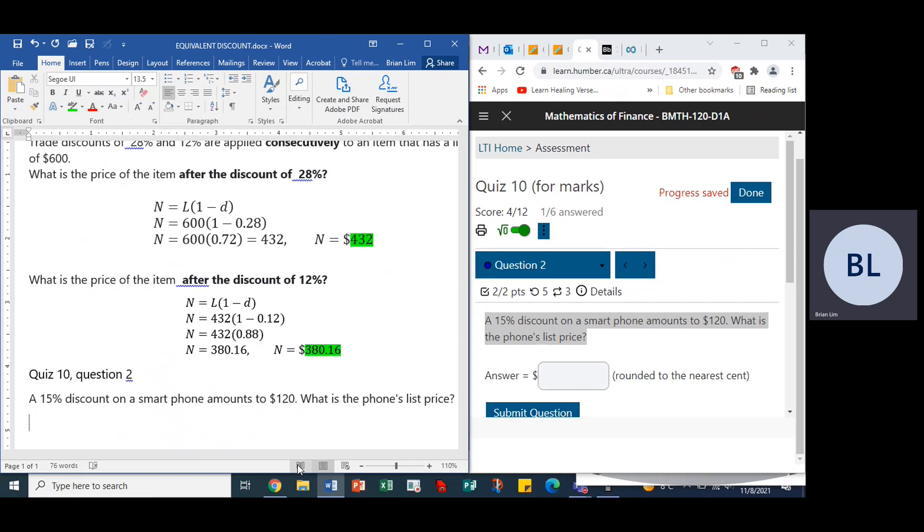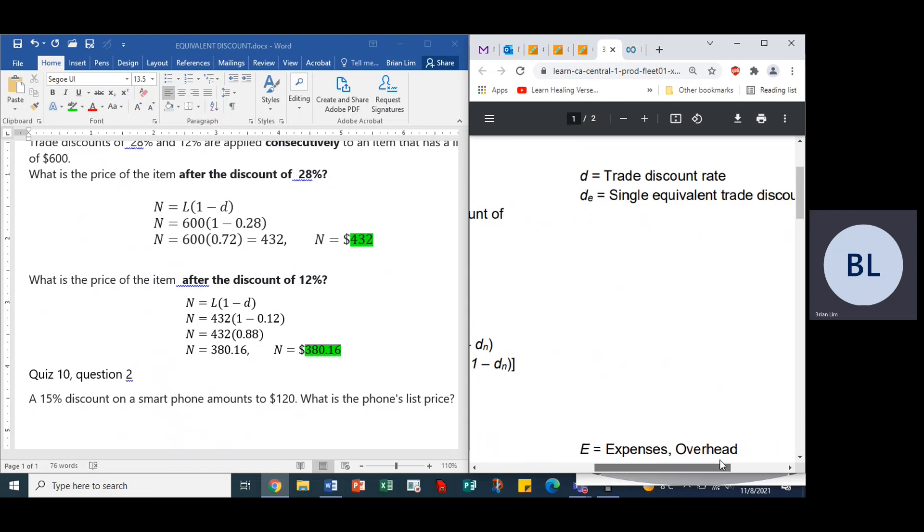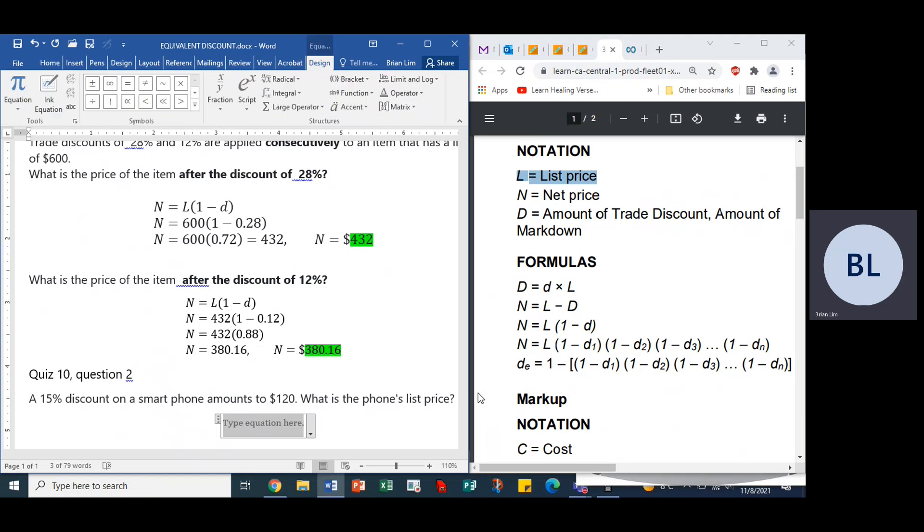OK, so how do we do that? Well, we look to the formula sheet. Yes, so the list price, here it is. D is the amount of trade discount. Alright, that's the actual amount in a dollar value. d is what we saw before, that is the discount rate. Alright, and of course L is the list price right up there.